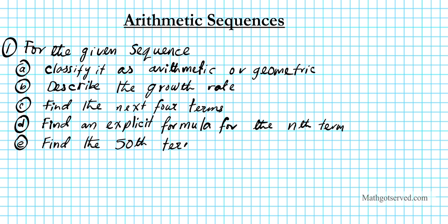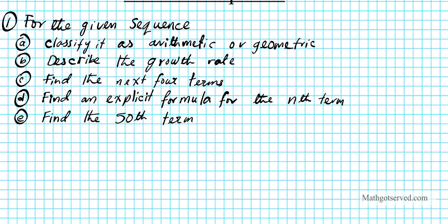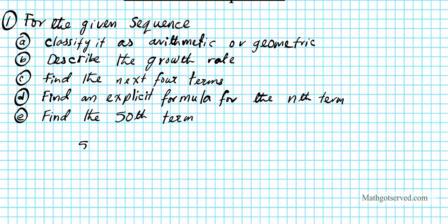So all these instructions we're going to apply to the sequence: 5, 10, 15, ... This is what a sequence looks like — just a list of numbers separated by commas. This is an infinite sequence since we have these dots, meaning the pattern continues for eternity.